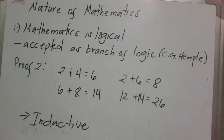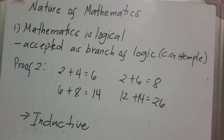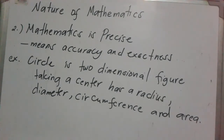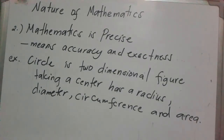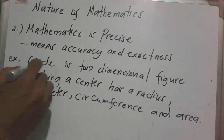To summarize: deductive starts from general to specific, while inductive starts from specific to general. Next nature of mathematics — mathematics is precise — meaning accuracy and exactness. For example, a circle: a circle is a two-dimensional figure.